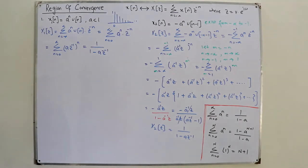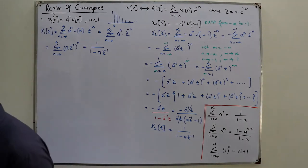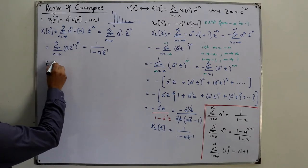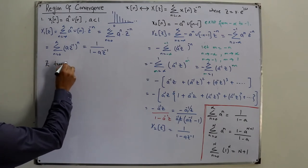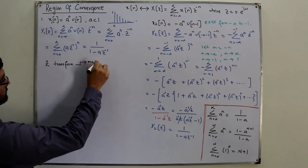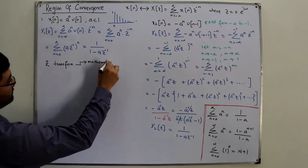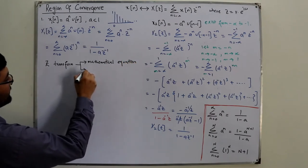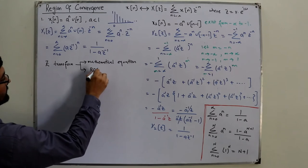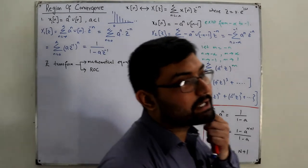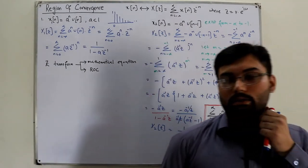Just as in the Laplace transform, the Z-transform is completely characterized by two things: number one, the mathematical equation; and number two, the values of z for which this equation converges — that is the region of convergence (ROC). That is the extra information needed.